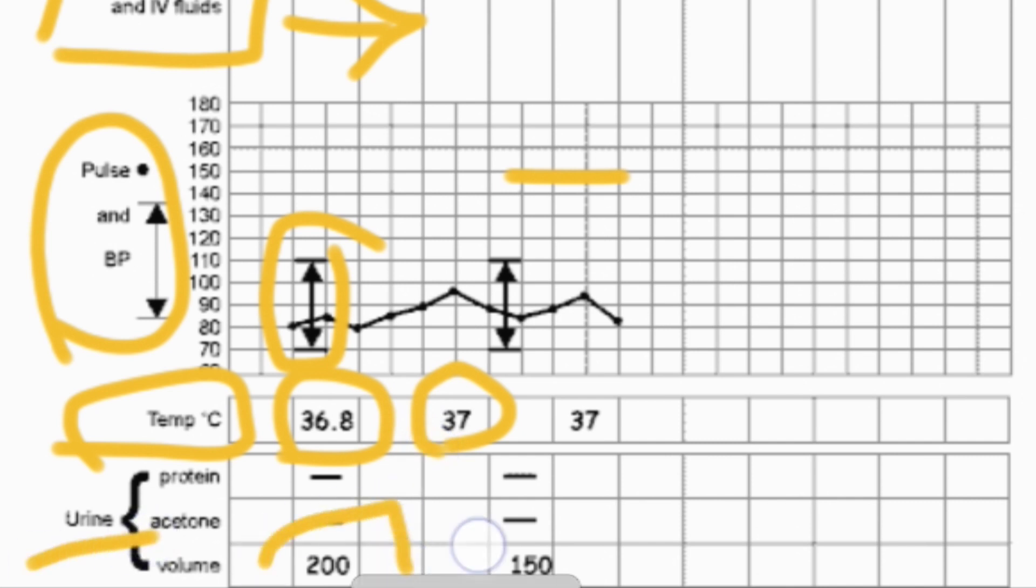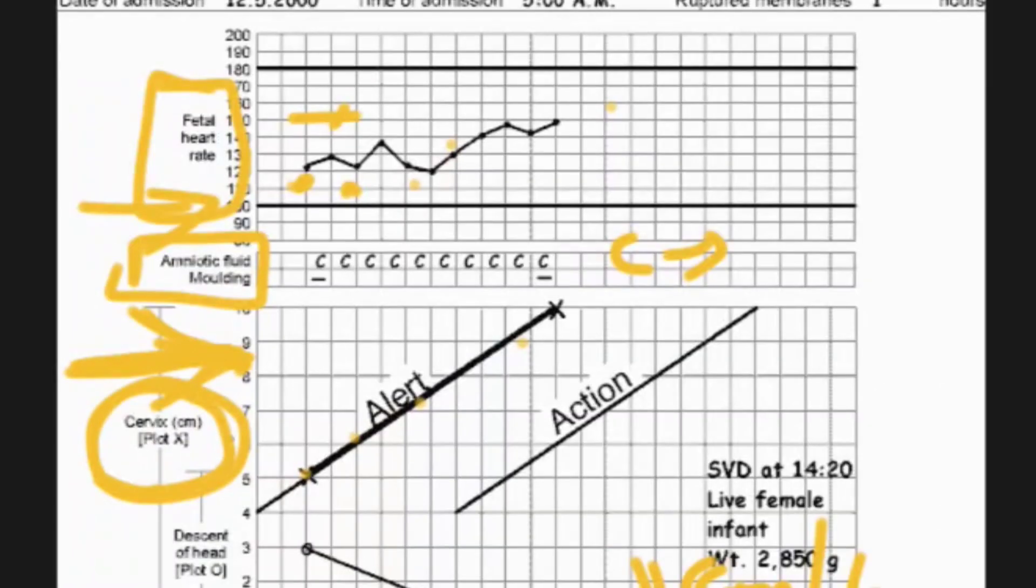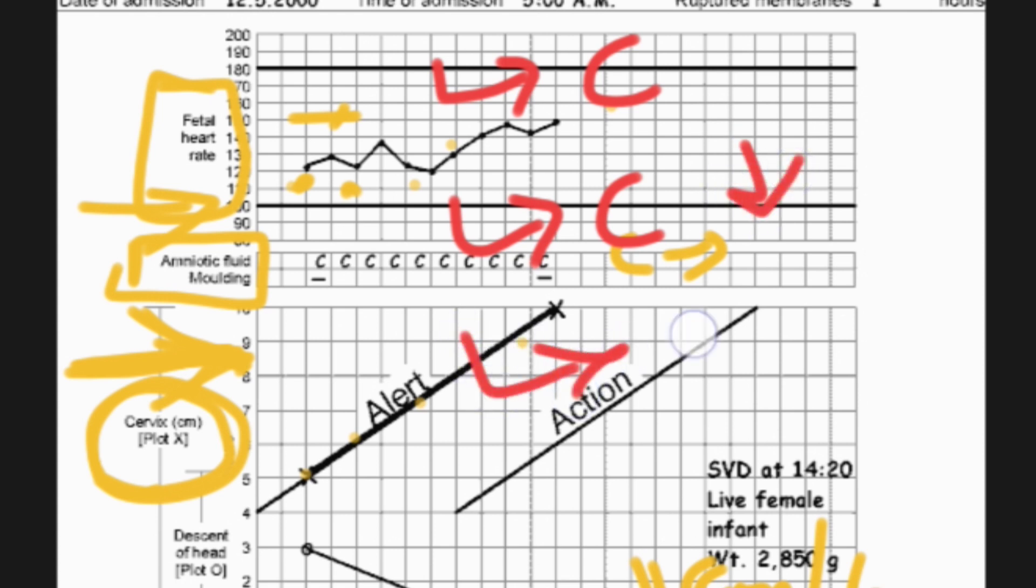What are the benefits of partograph? By using this partograph, the C-section has been reduced, and the child mortality and morbidity rate has been decreased. It is useful for study purposes, and normal delivery rate has been increased. These are the benefits of partograph. Questions will be provided at the end of the chapter. Until then, stay tuned to meet you in the next video. Bye.